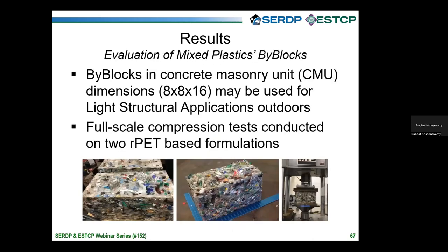We then evaluated technologies for converting a broader range of mixed plastics waste — plastics 2 through 7 — into useful products. There is a company with technology to take mixed plastics waste and make what are called bi-blocks, which are CMU dimensions — 8 by 8 by 16 inches — for use in light structural applications outdoors. We evaluated and modified this approach for FOB conditions, and the most important property to test for these blocks is compression.